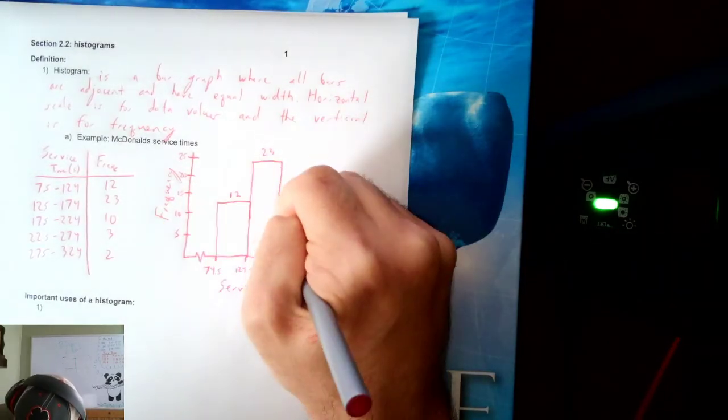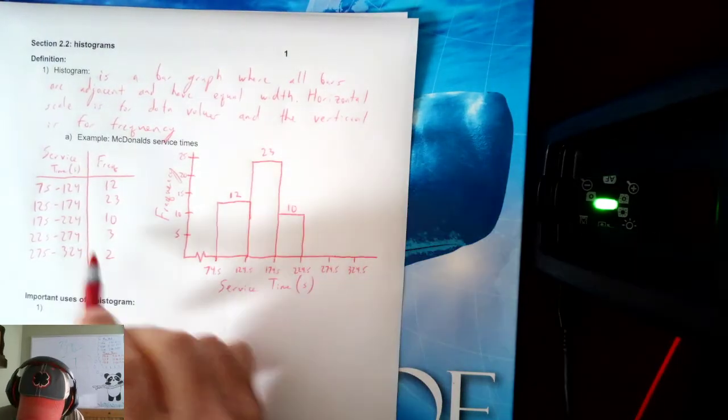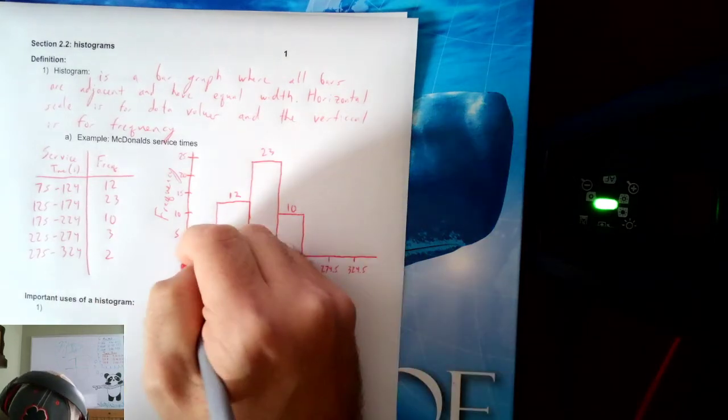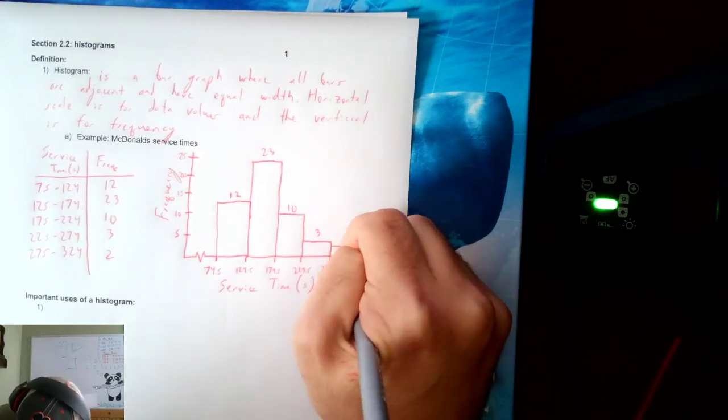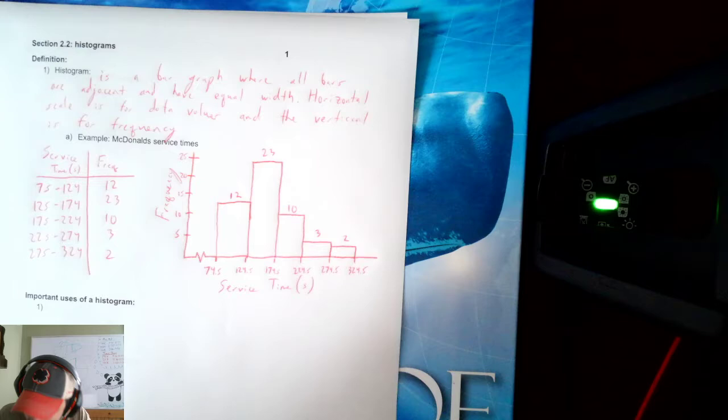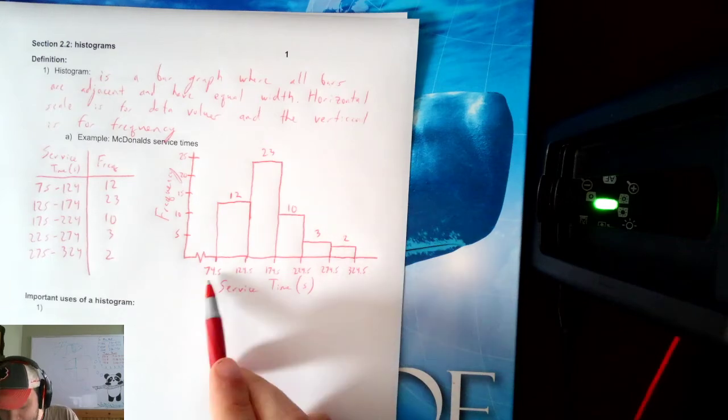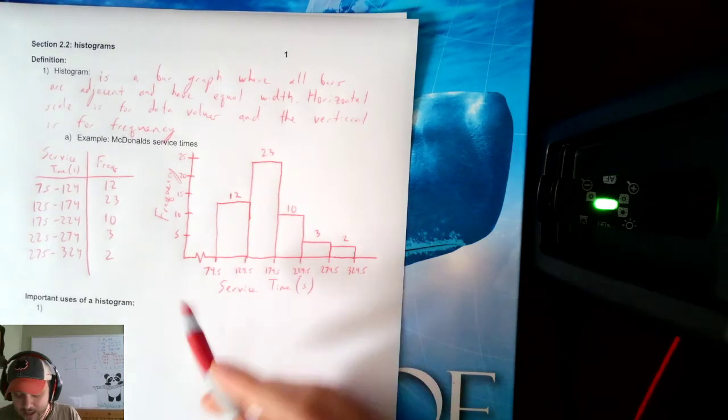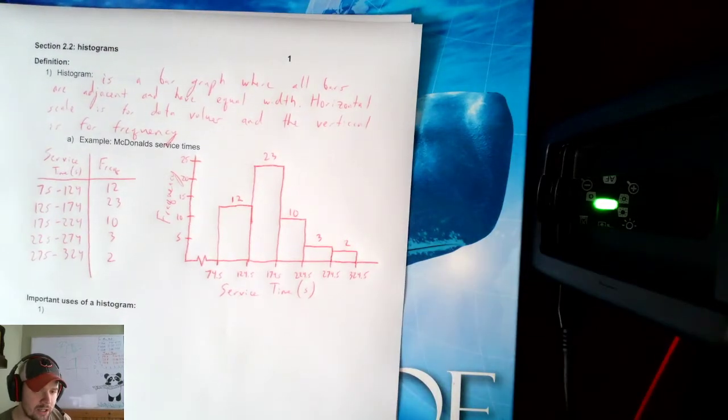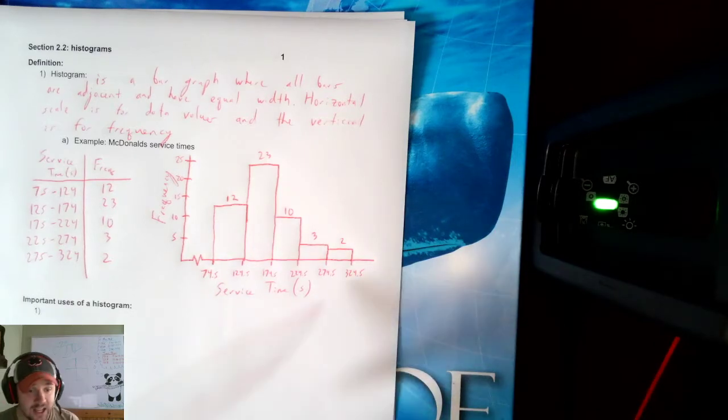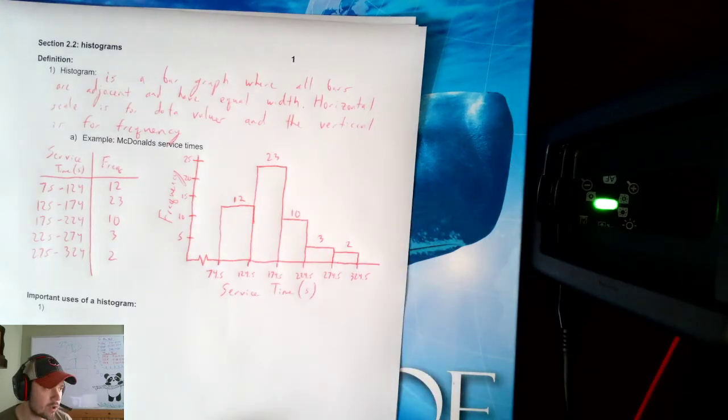Next, I got to go up to 10. So once again, the bars need to touch. And I go up to 10. Next, 3. So 3 will be somewhere down maybe about here. And then 2 will be a little bit shorter for that last category. And this is the histogram for the frequency table we saw earlier. Notice we use the class boundary numbers here and frequency here, and then I drew the bars touching. Those are all important properties.